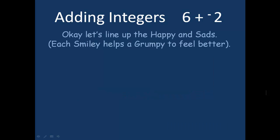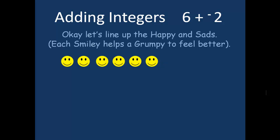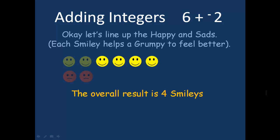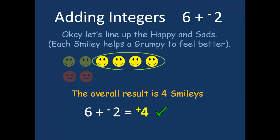Alright, let's look at adding integers. Our first sum here is six plus negative two. Let's line up happy and sads. We've got six happy faces for the six, and two grumpies for the minus two. The overall result is four smileys, because remember, each smiley helps a grumpy to feel better. Six plus negative two equals an answer of positive four.